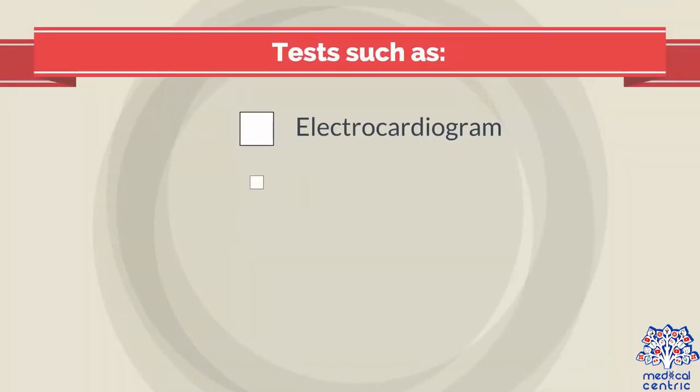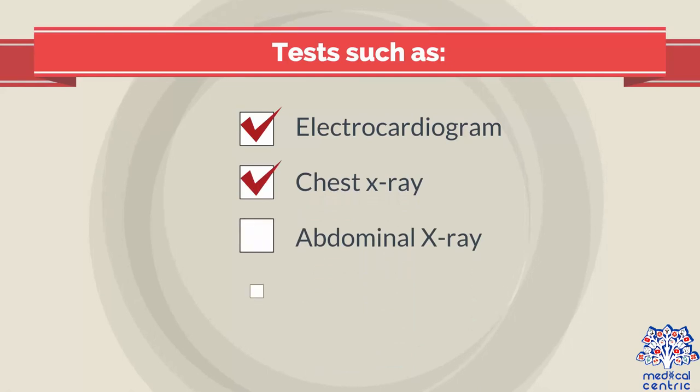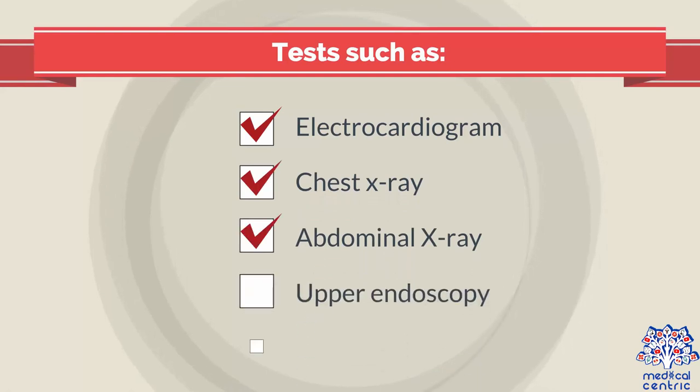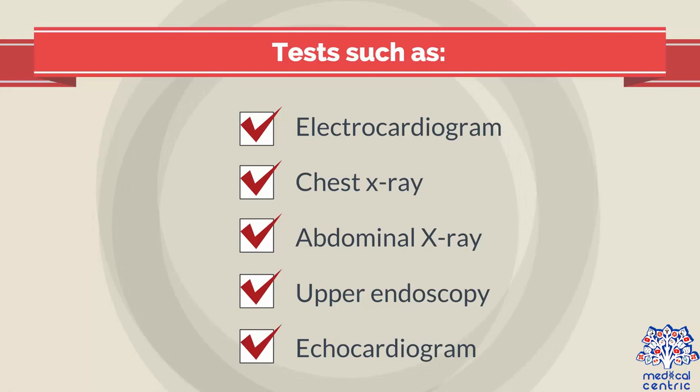Additional tests may be carried out if you are diagnosed, to determine whether the disease has entered the chronic phase and caused heart or digestive problems. These tests include electrocardiogram, chest x-ray, abdominal x-ray, upper endoscopy, and echocardiogram.